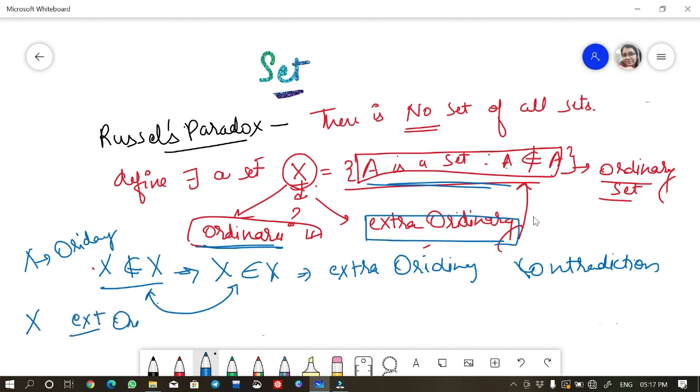If this X belongs to X, this implies X will hold this property. Which is what? X is a set such that X does not belong to X, but this is what? This is ordinary set.